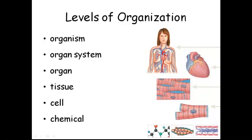Each organ system is made out of different organs. Take your digestive system — most people are familiar with that one. The organs in the digestive system include the stomach, small intestines, esophagus, gallbladder, pancreas, large intestine, and liver. These are not even all of them, but all of these individual structures are organs in that organ system.